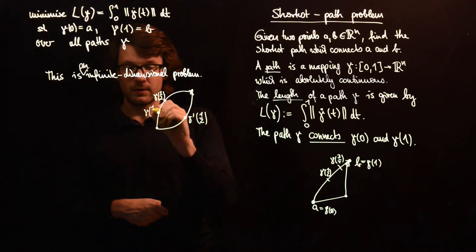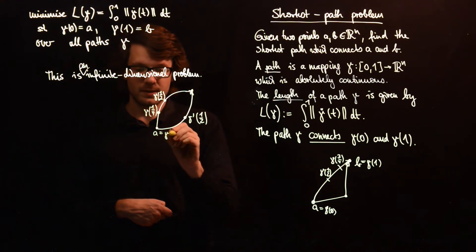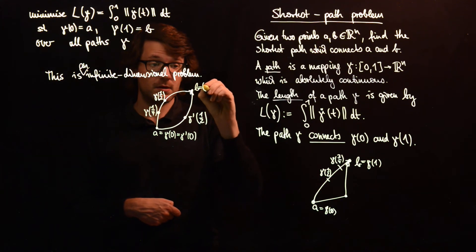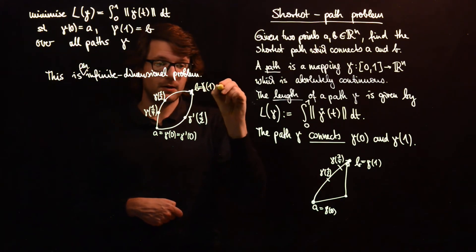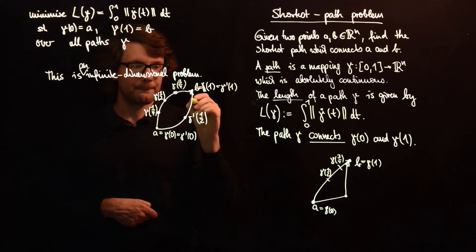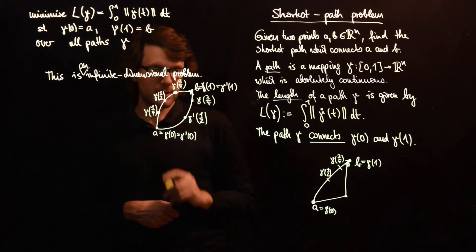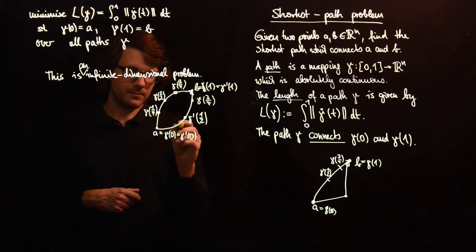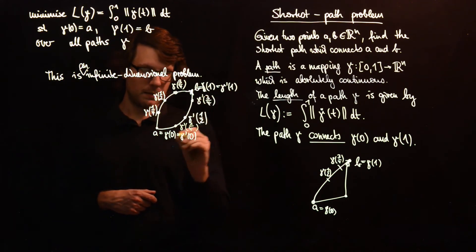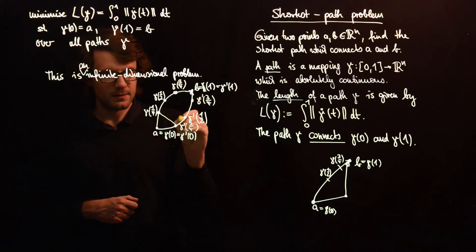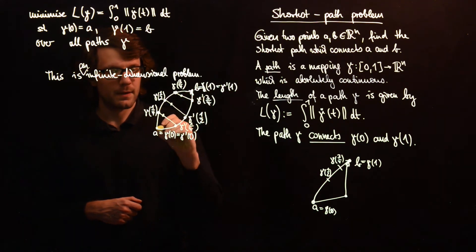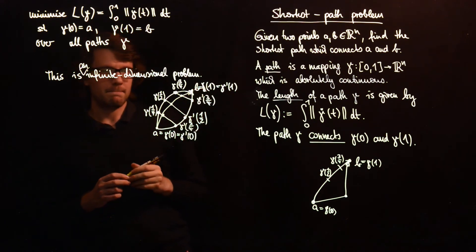Then we have gamma of 1 quarter. Here we have A, which is gamma of 0 and gamma prime of 0. Here we have B, which is gamma of 1, and gamma prime of 1, and so on. And to form a mixture, we take just, we take every point in time, we form the mixtures here, and then we get our mixture path.